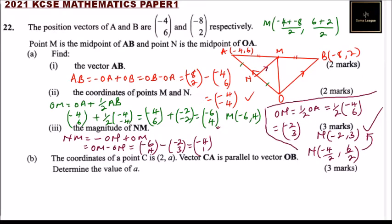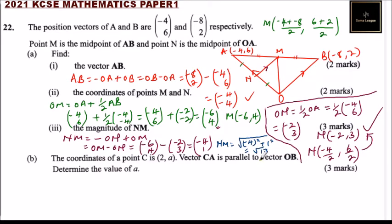To get the magnitude: |NM| = √((-4)² + 1²) = √(16 + 1) = √17. Using a calculator, √17 ≈ 4.12. That is how you work out that part.